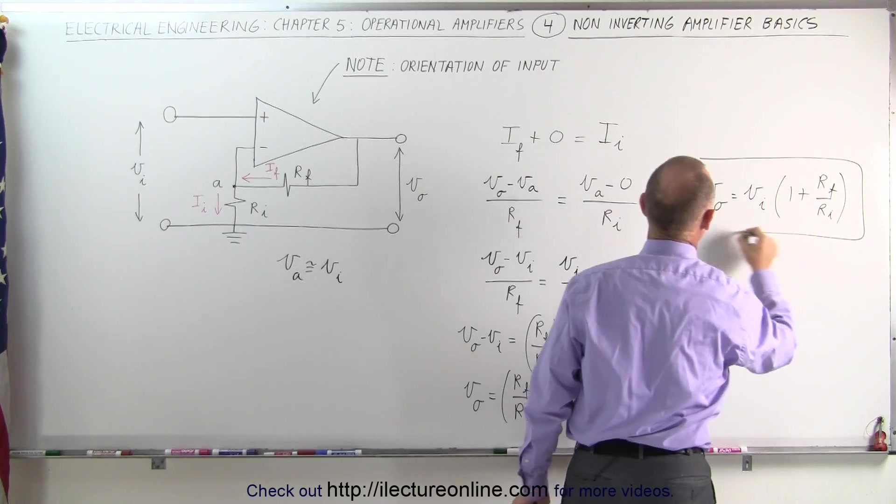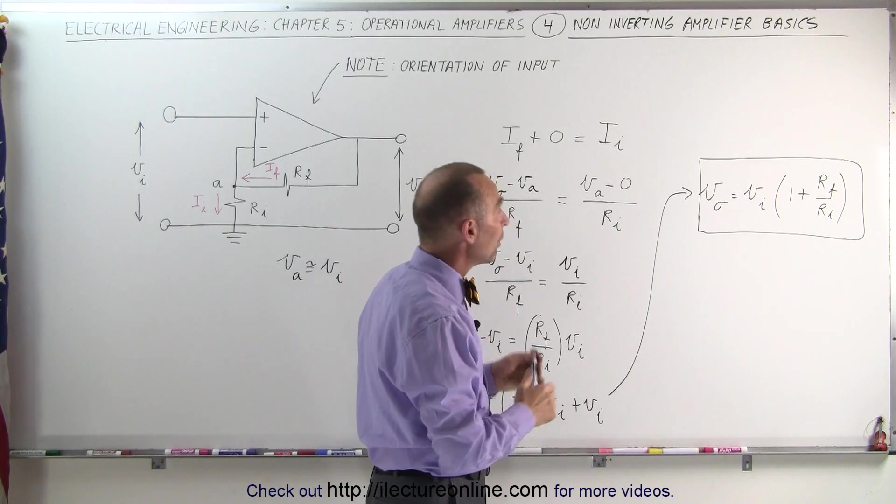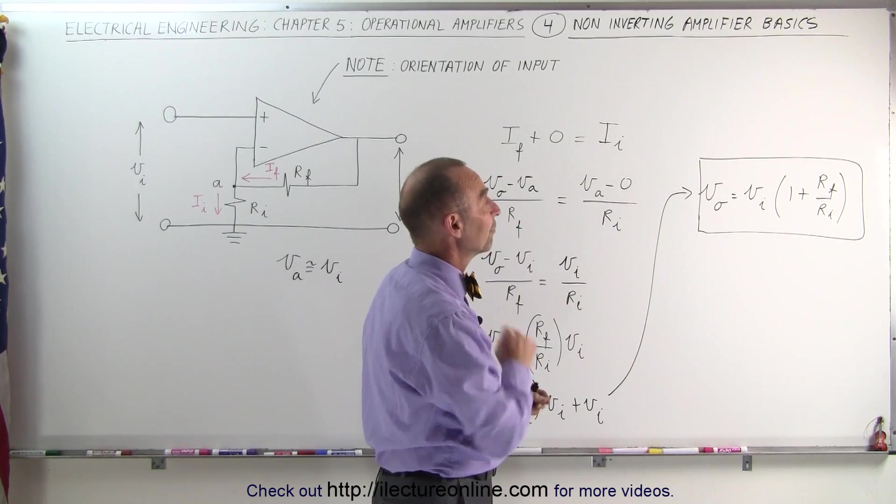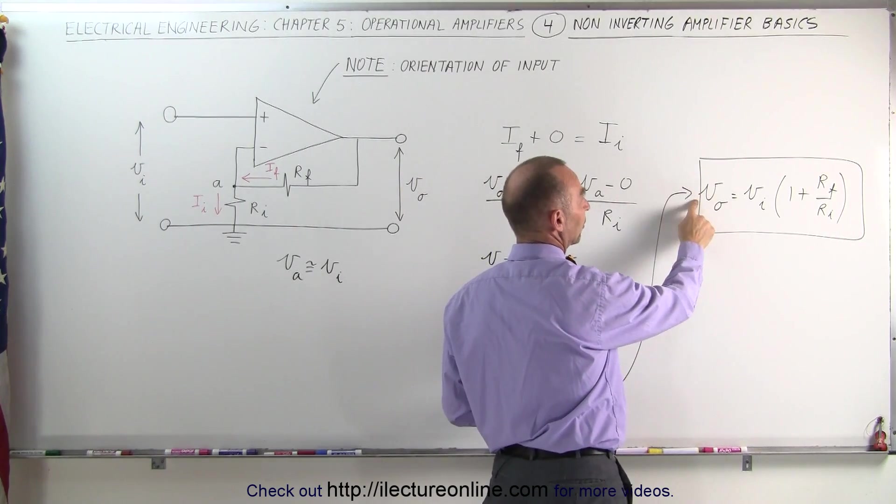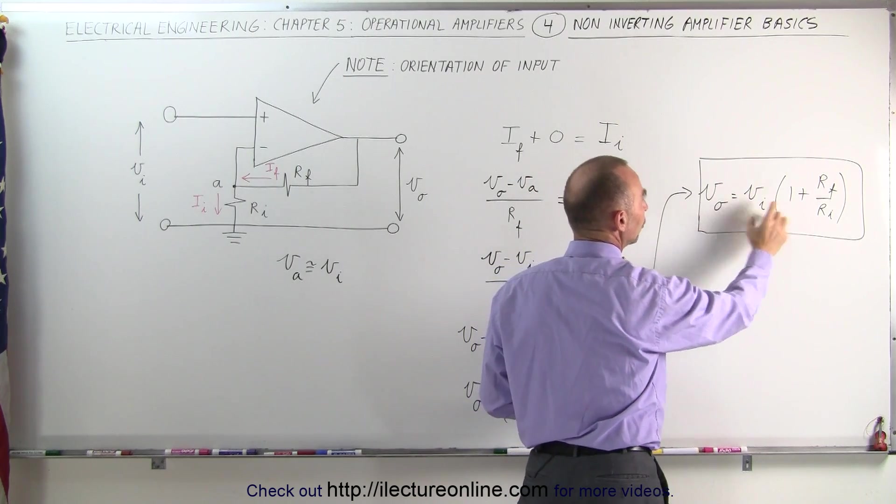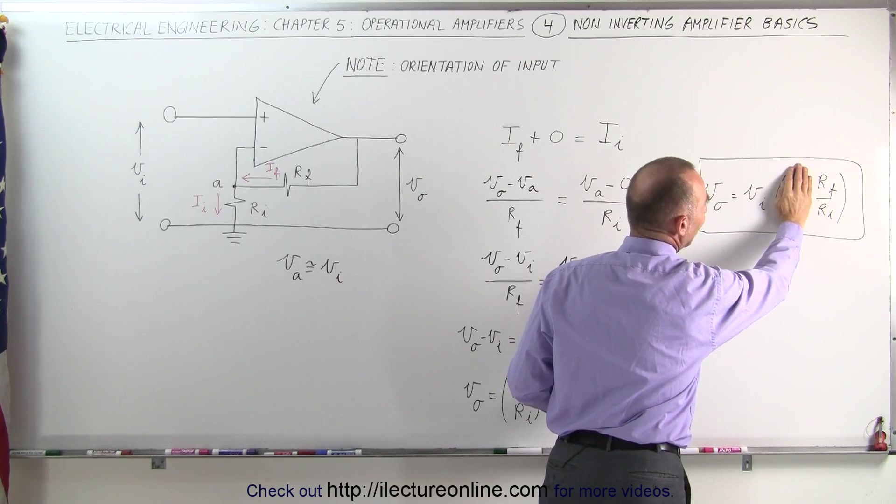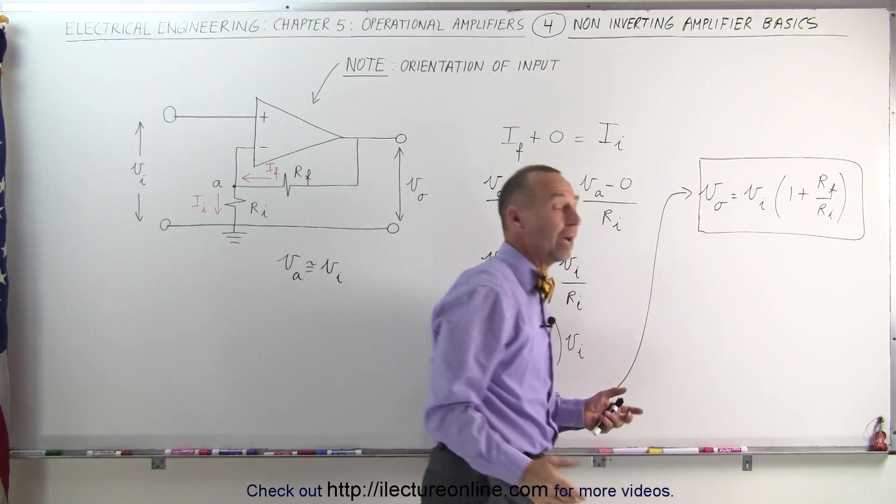And that is then the equation that shows us the amplification of the operational amplifier when we have connected it to the non-inverting terminal. Notice that the polarity of the output voltage is the same as the polarity of the input voltage, and it's equal to the output voltage is equal to the input voltage times the gain factor plus one.